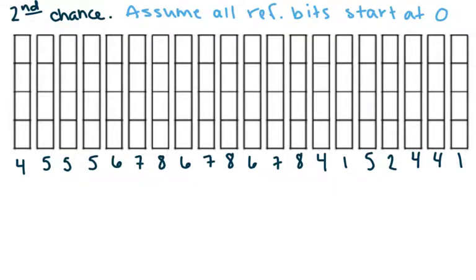Alright, so just remember at its core, the second chance algorithm is FIFO, right? So first in, first out, it just has that extra twist that a page is going to get a second chance. So let's go ahead and start. So we start here, and we're going to assume that all the reference bits start at zero, so they're initialized to zero.